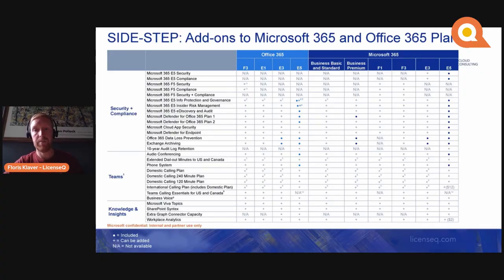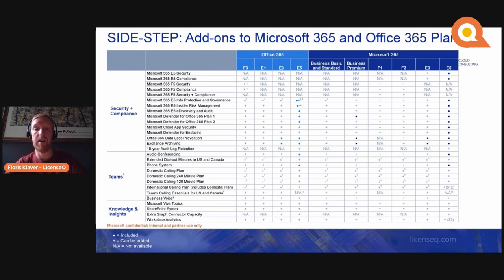If we look at all the possible add-ons, these are shown on screen right now — the most important ones outlined in different categories. You have Microsoft 365 E5 Security, and on the right-hand side you see all the columns for Office 365 and Microsoft 365, showing how you can add an add-on on top. If it says 'not available,' that's not possible; if it has a plus, it can be included; and if it has a dot, it is already included.